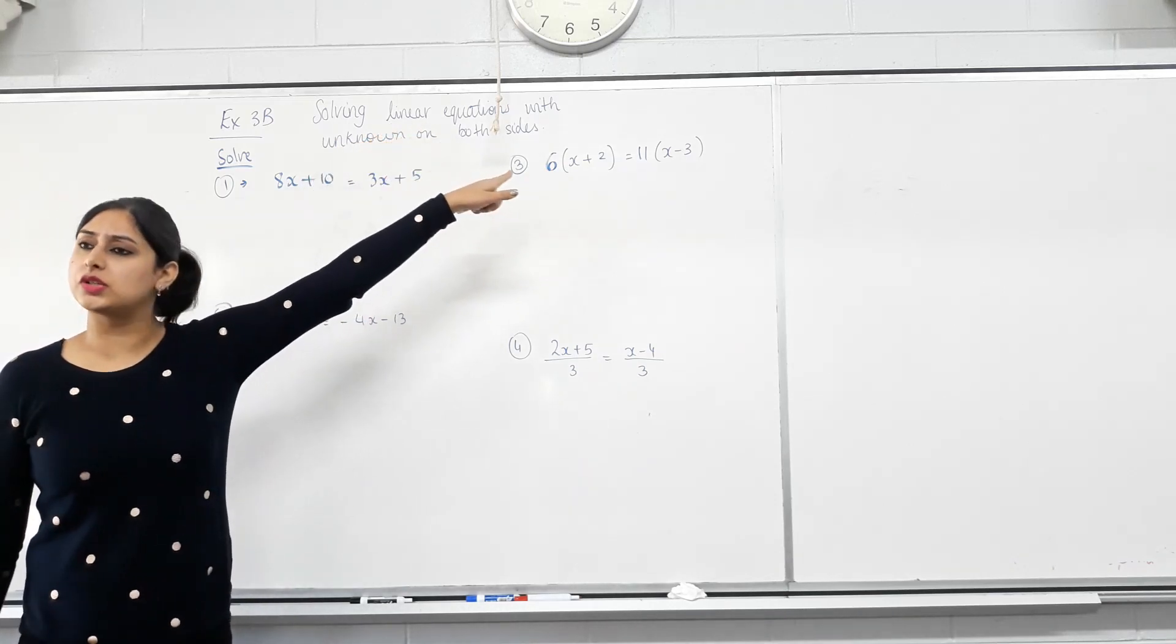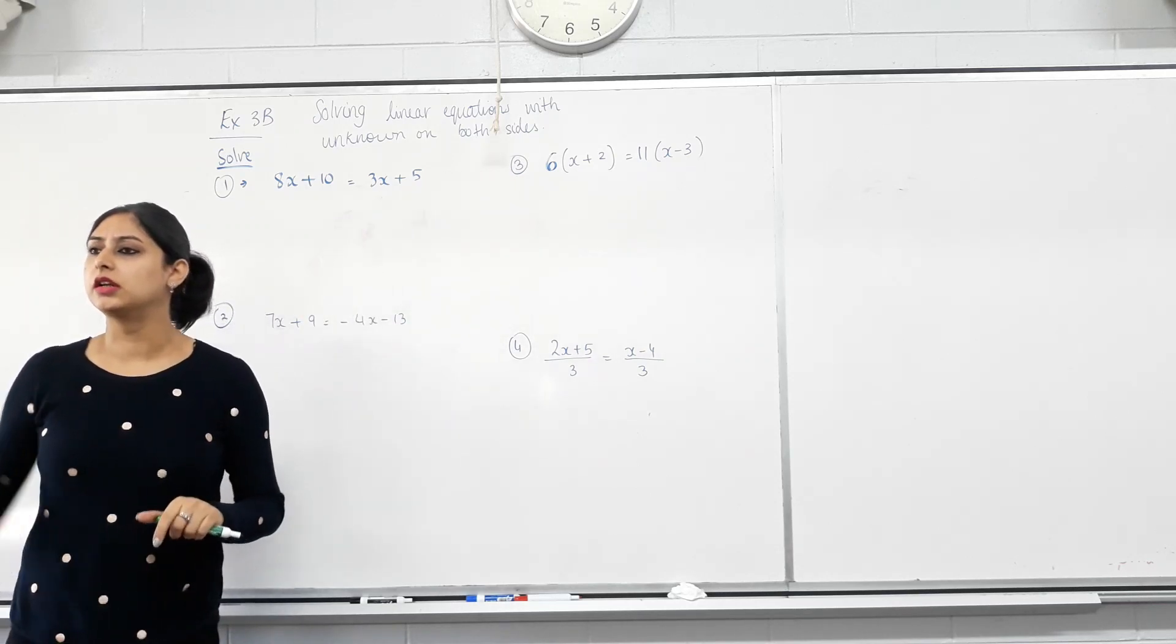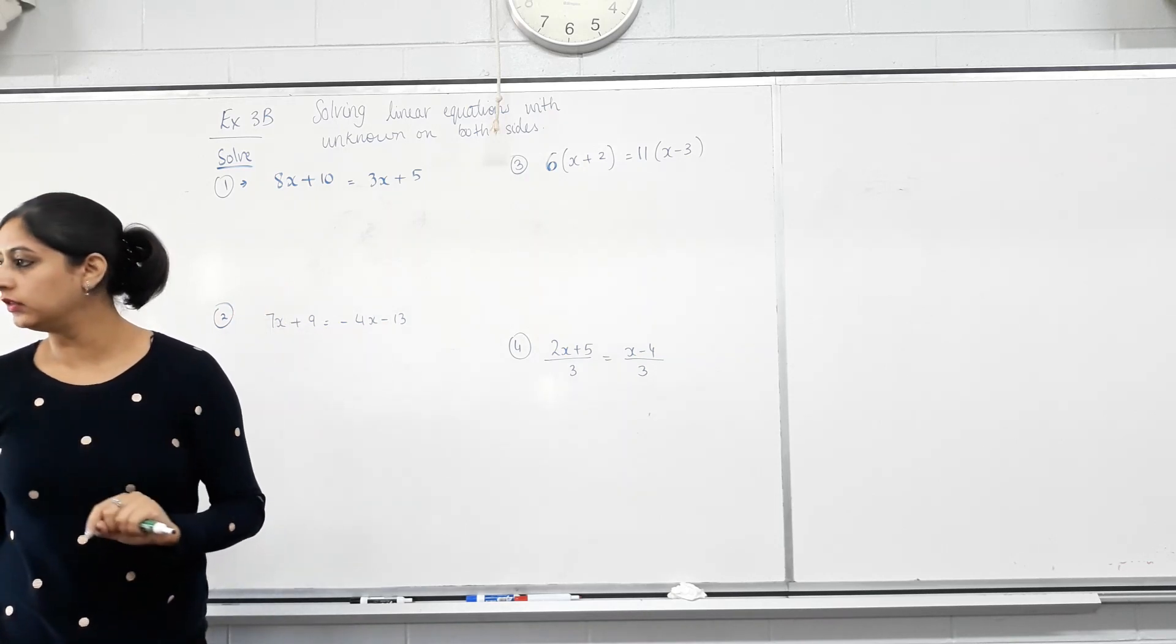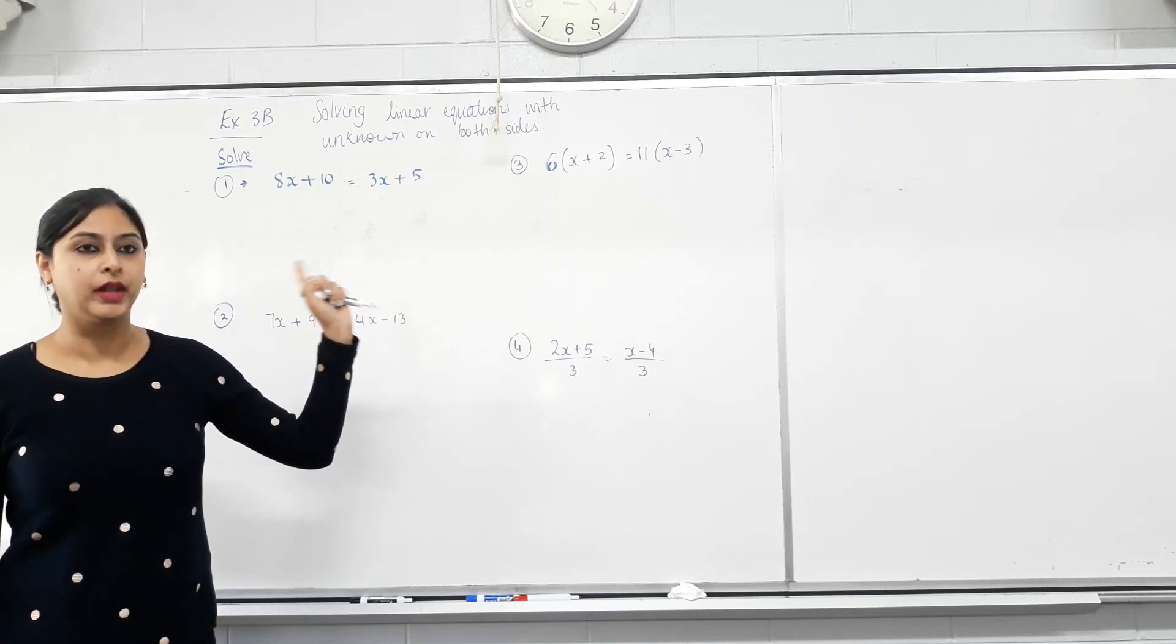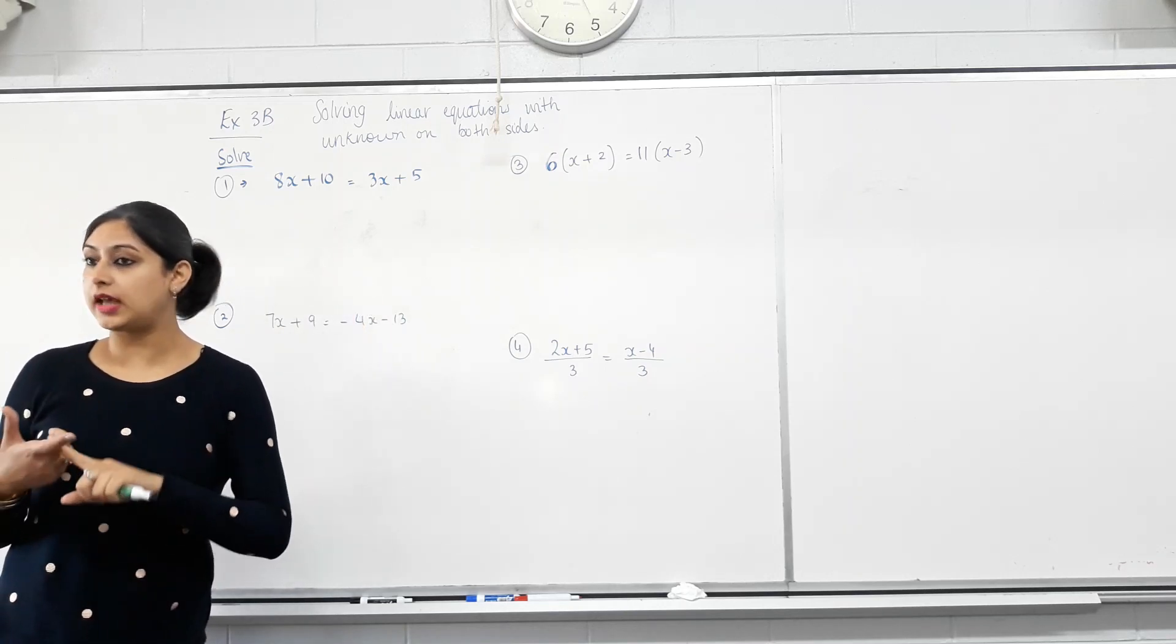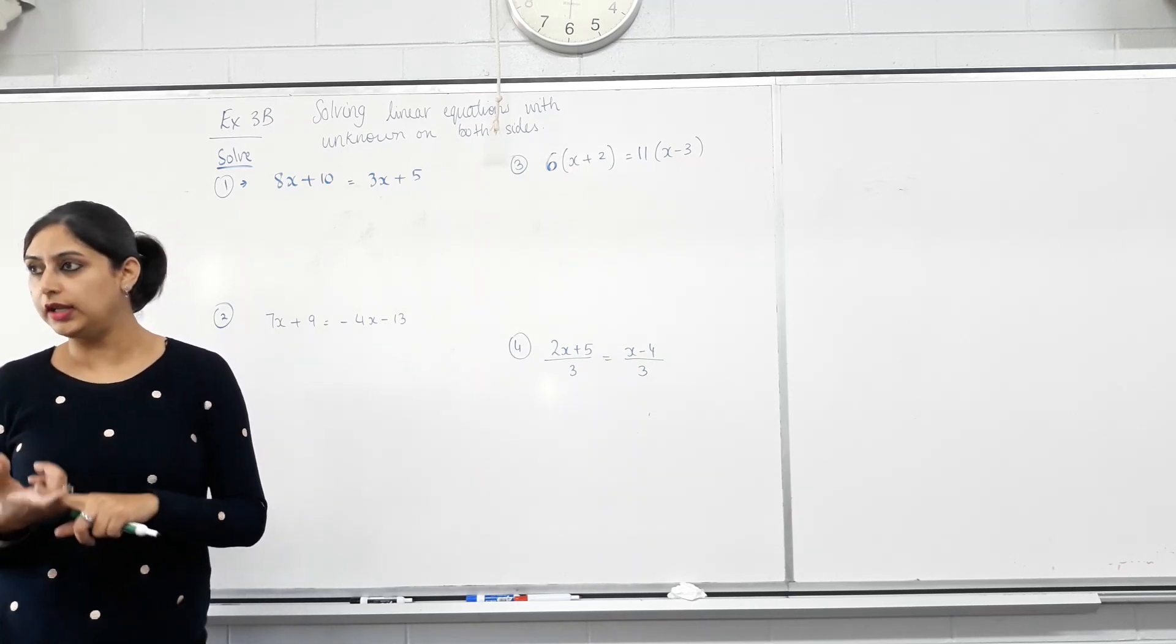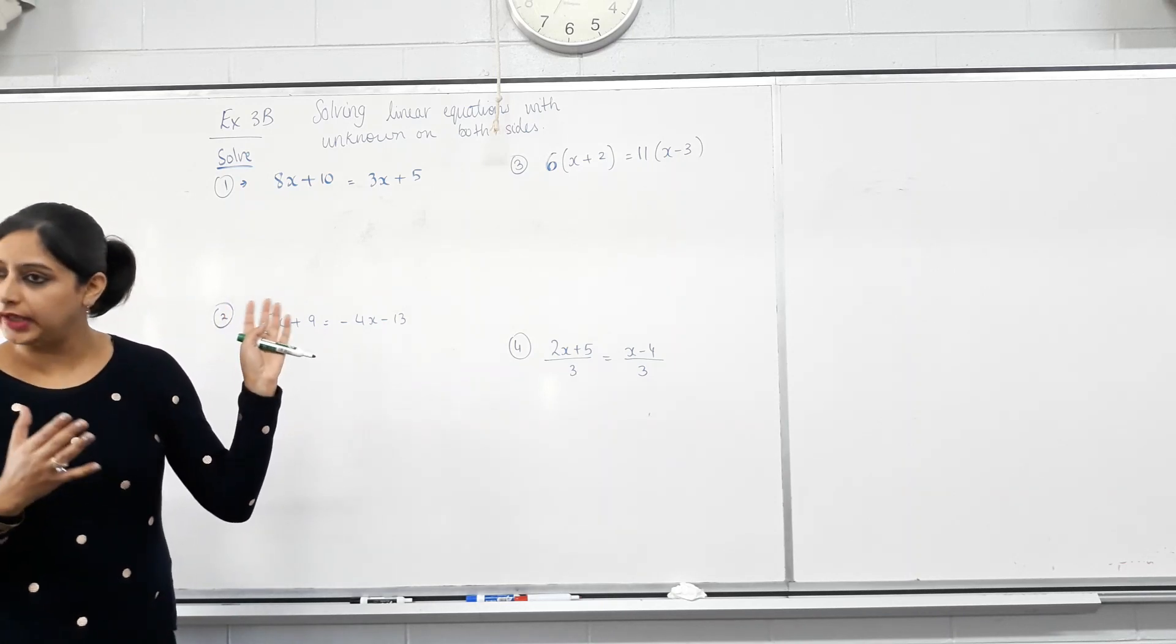And they are all linear equations. What makes them linear equations? We did talk about it last lesson. 1 power. Power of the unknown is? 1. Do we have an x squared term? No. Do we have an x cubed term? No. So they are all equations because they have an equal sign. They are linear equations because the power of x or any unknown is 1.